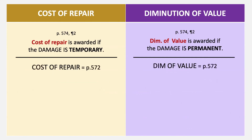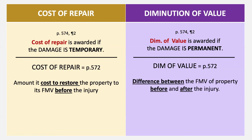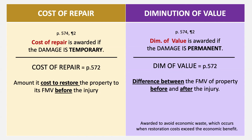Cost of repair is the amount it costs to restore the property to its fair market value before the injury. Diminution of value is the difference between the fair market value of the property before and after the injury. We make diminution of value an option because we don't like waste — if it costs more to repair something worth very little, we'd rather give the difference in value than pay thousands to fix something worth only $100.